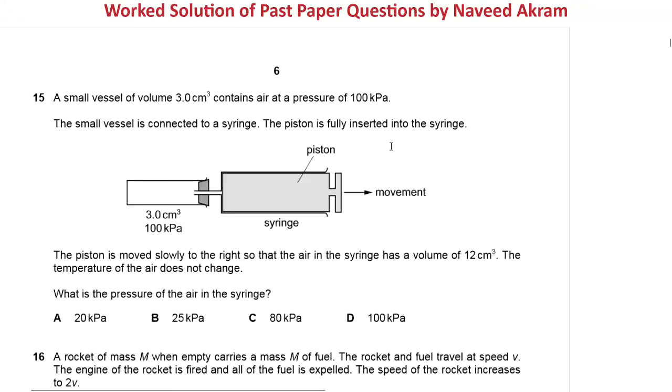Assalamu alaikum, this is Naveed Akram. In this video, we are going to discuss question number 15 of paper 1, variant 2, May/June 2020. A small vessel of volume 3 cubic centimeter contains air at a pressure of 100 kilopascal.